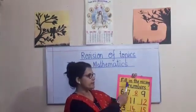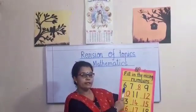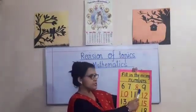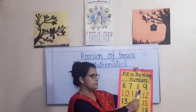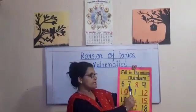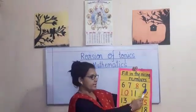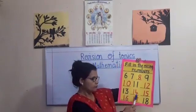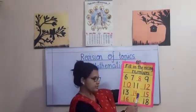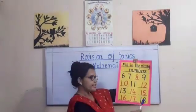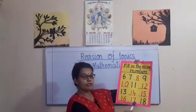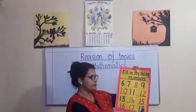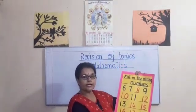The first topic is fill in the missing numbers. The first given number is 6. What comes after 6? 7. After 7 you will find a dash and a blank space. You have to fill in the number which comes after the given number. What comes after 7? 8, 9, 10, 11, 12, 13, 14, 15, 16, 17 and 18. When you see a dash, you have to fill in the number which comes after the given number. After you finish this work, go through it and find out if there are any mistakes.